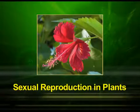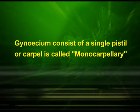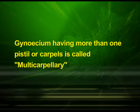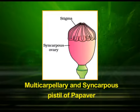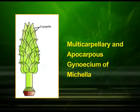Now let us start with the next part of the topic — sexual reproduction in plants. The gynoecium represents the female reproductive part of the flower. When the gynoecium consists of a single pistil or carpel, it is called monocarpellary. When it has more than one pistil or carpel, it is called multicarpellary. When there are more than one carpel, the pistils may be fused together and called syncarpous, as shown in the diagram of the multicarpellary and syncarpous pistil of Papaver. On the other hand, the multicarpellary pistil may be free and called apocarpous, as shown in the diagram of the multicarpellary and apocarpous gynoecium of Michelia plant.